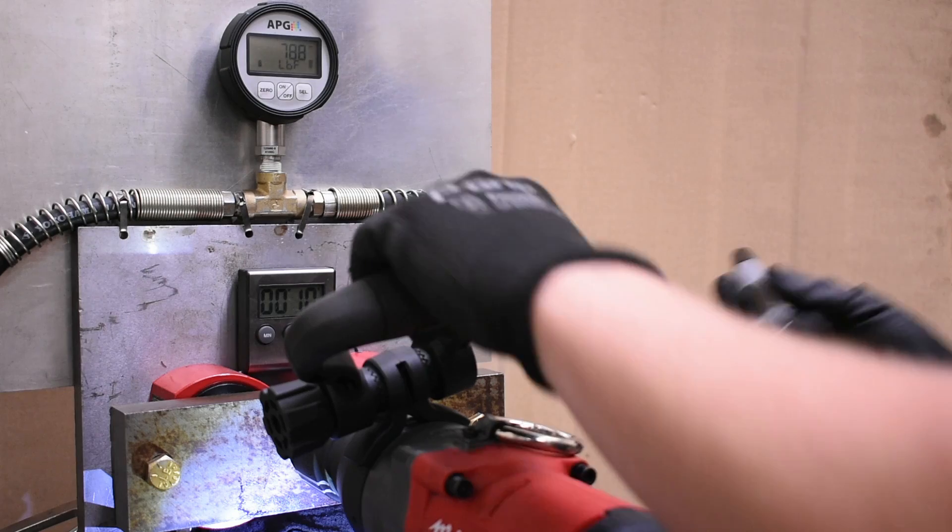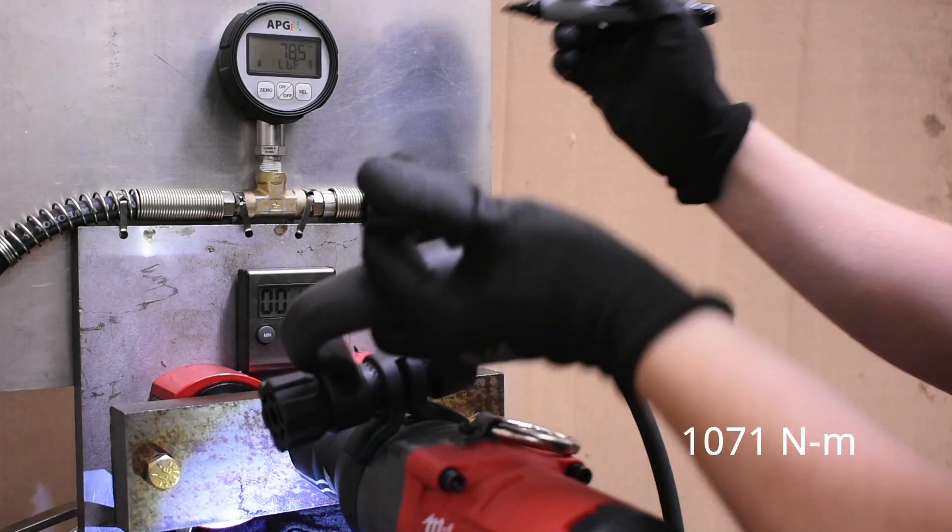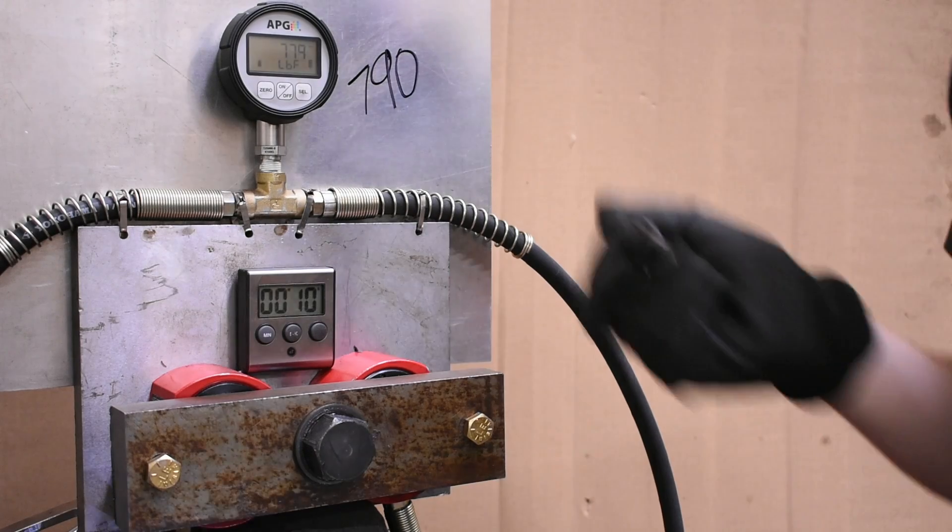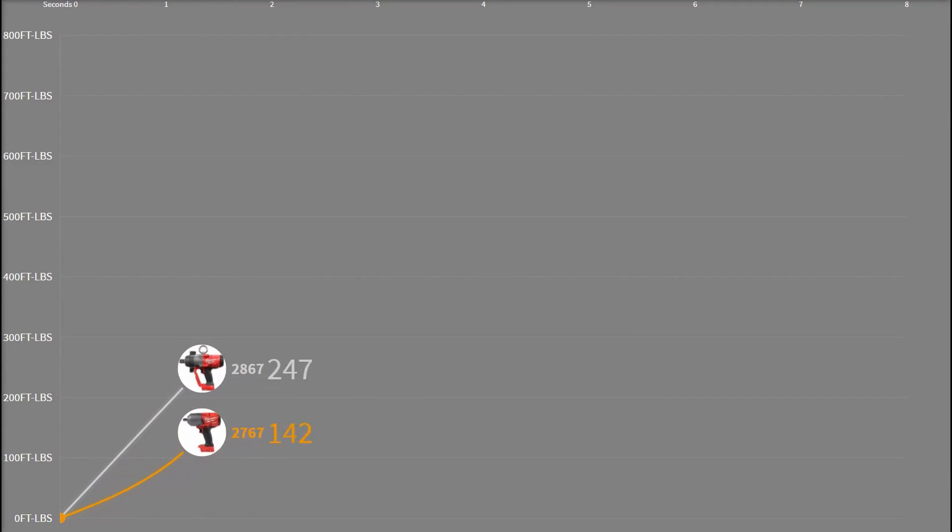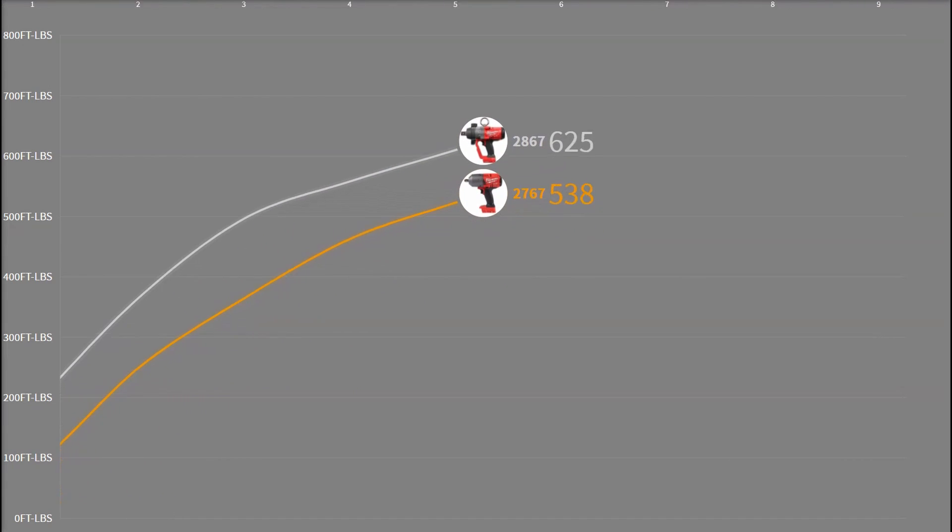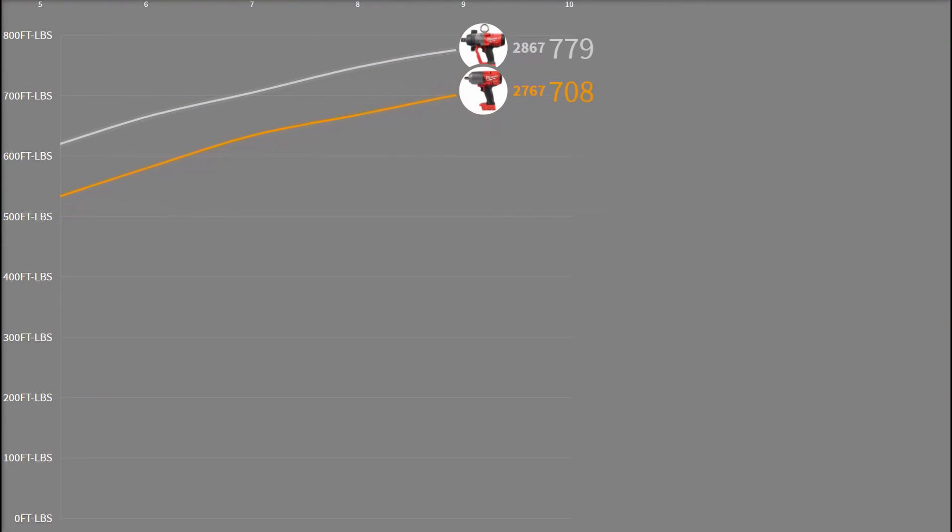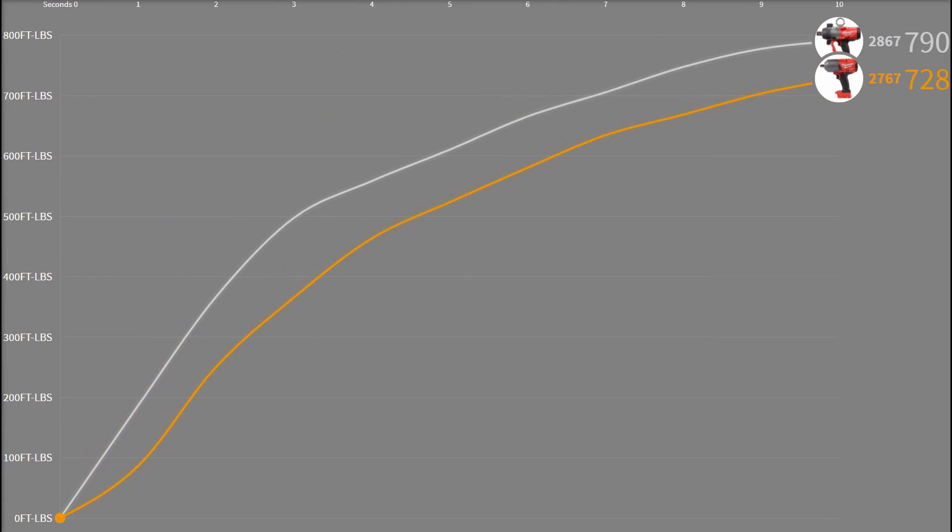This one had us scratching our head. Clearly 100-120 foot-pound gain down low, signaling a big dynamic torque advantage for the one-inch, but ultimately, overall, a much smaller gain with the one-inch in this reverse test than we expected. We did this test three times as usual, same story.